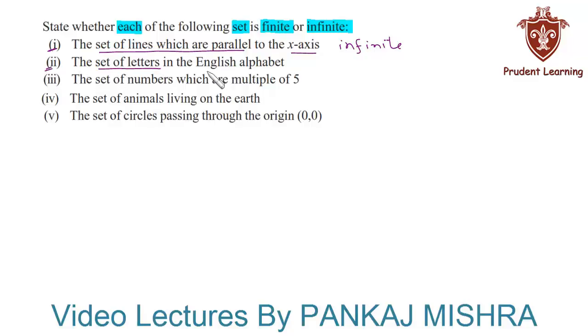The second set given to us is the set of letters in the English alphabet. Now this is a finite set because we know that there are 26 letters in the English alphabet. Hence this set will contain 26 elements, so it is a finite set.